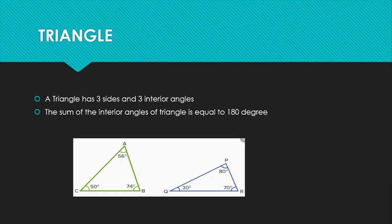A triangle has three sides and three interior angles. A very important point about a triangle is that the sum of the angles of a triangle is always equal to 180 degrees.